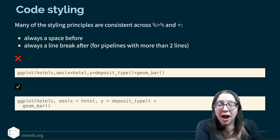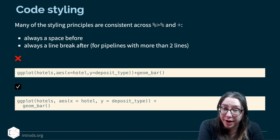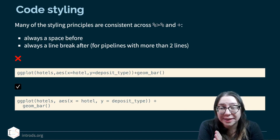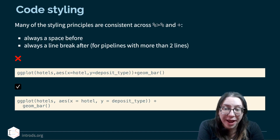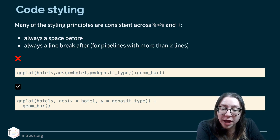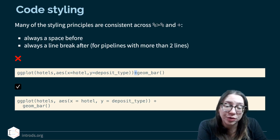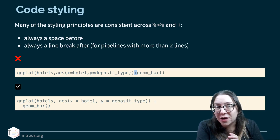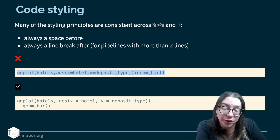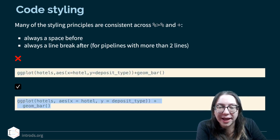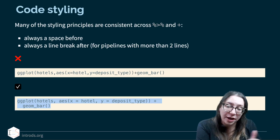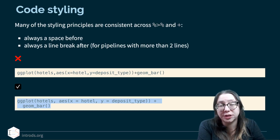In terms of code styling, many principles are consistent across the pipe and the plus operator. Always leave a space before it and a line break after it, especially for pipelines with more than two lines. For example, ggplot code without spaces around equal signs or line breaks after plus will still run, but just because it runs doesn't mean it's appropriate. Laying out code properly makes it much easier to debug, because you can visually see which geom or feature corresponds to each line.